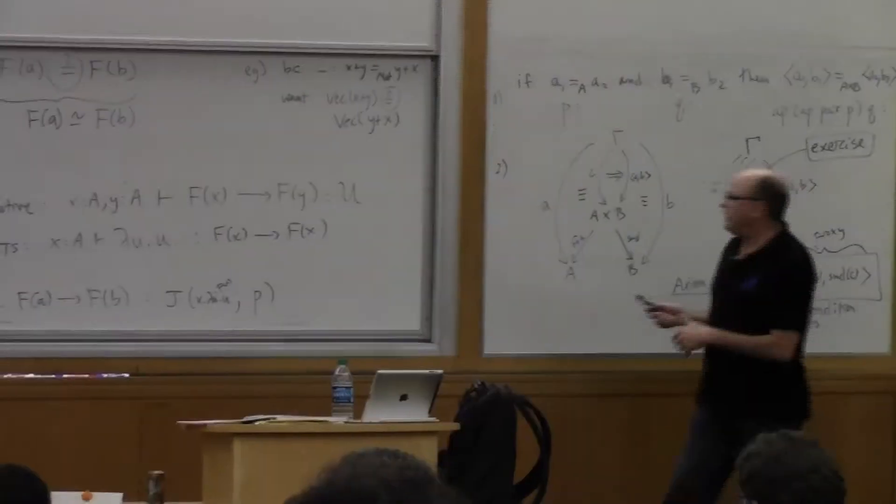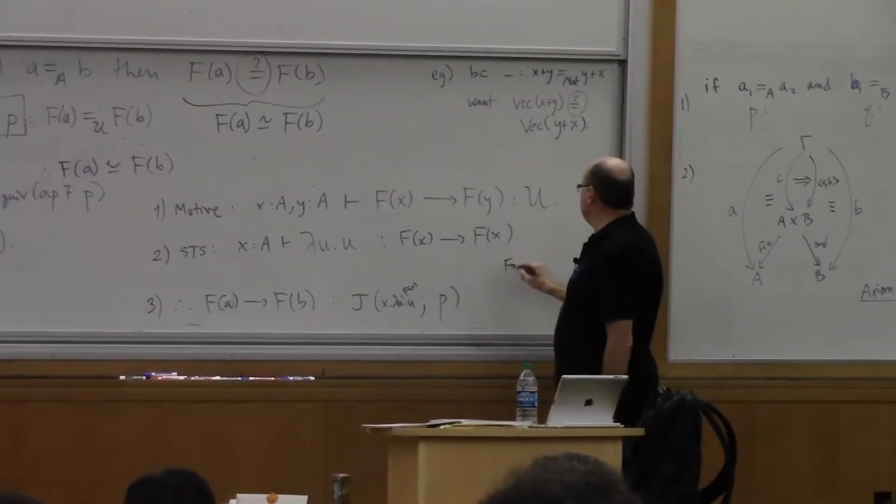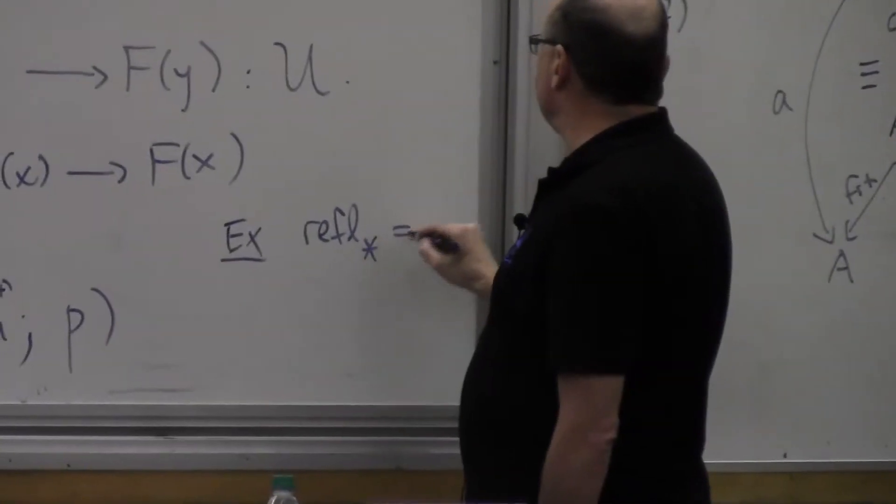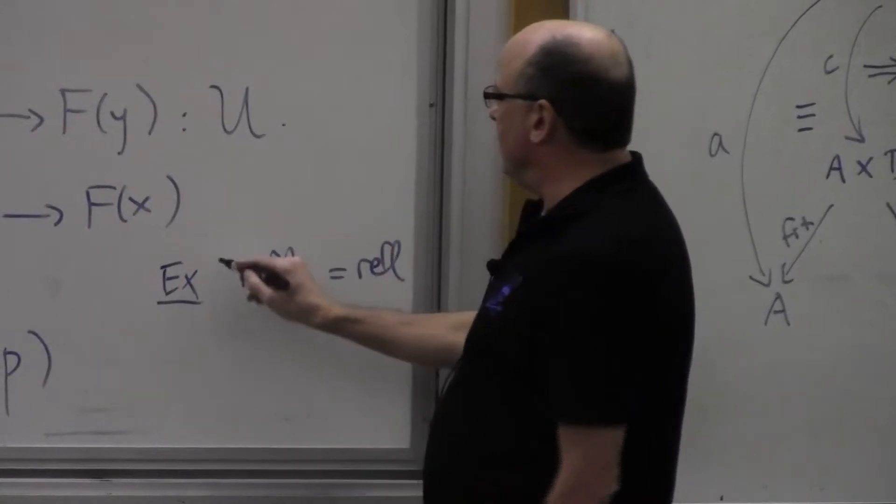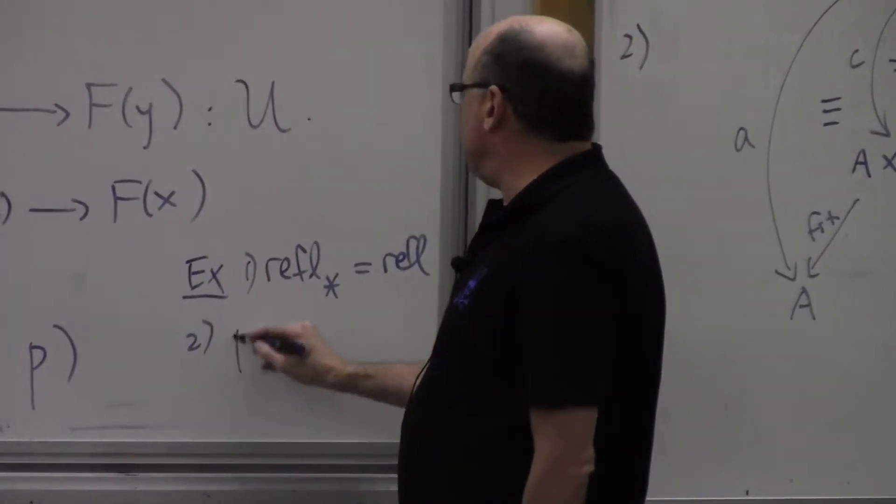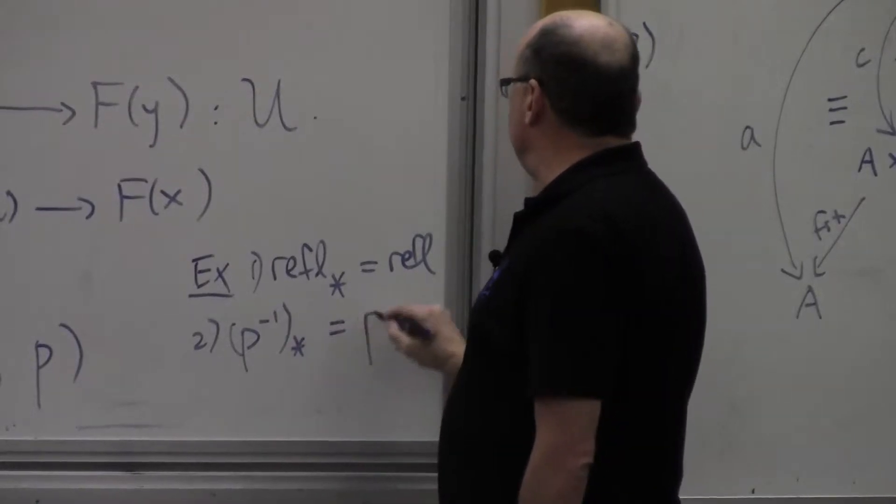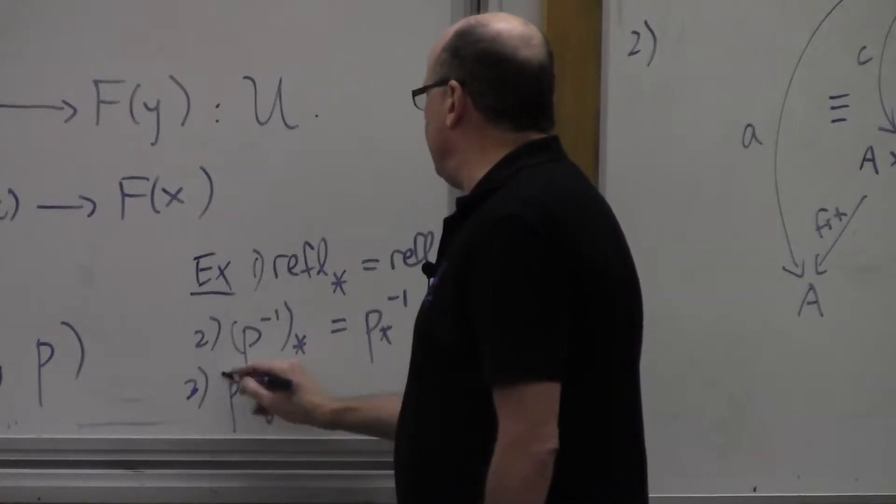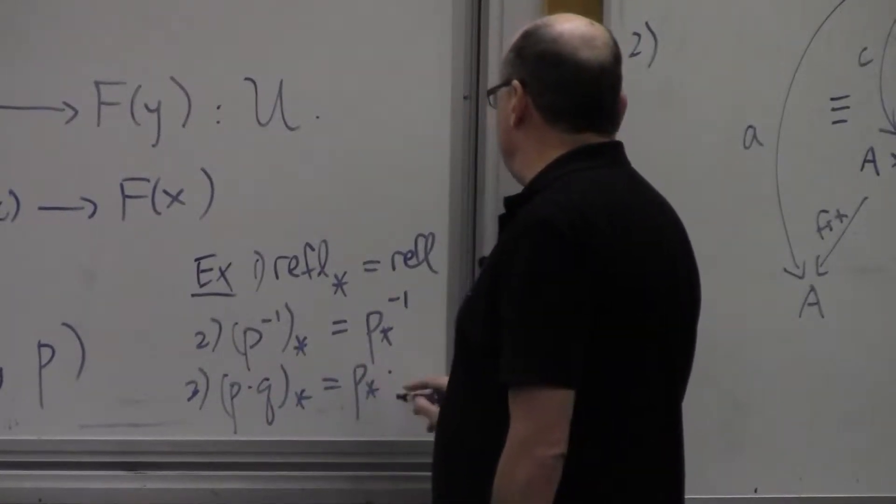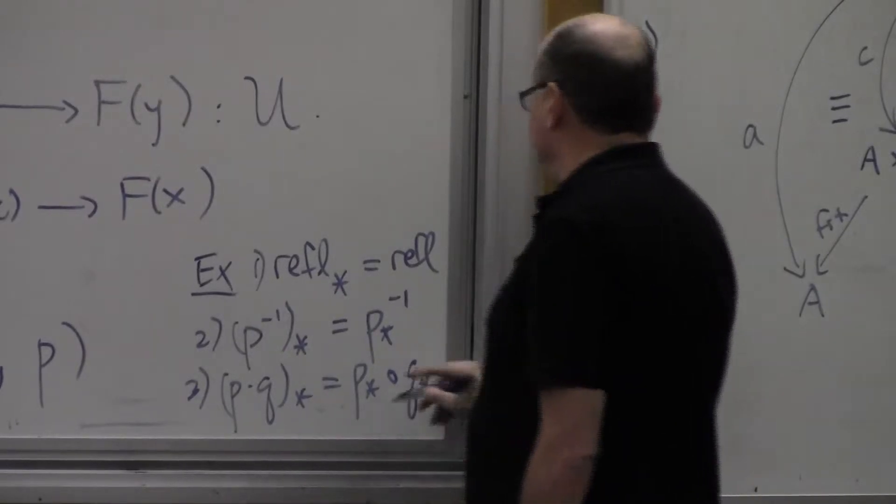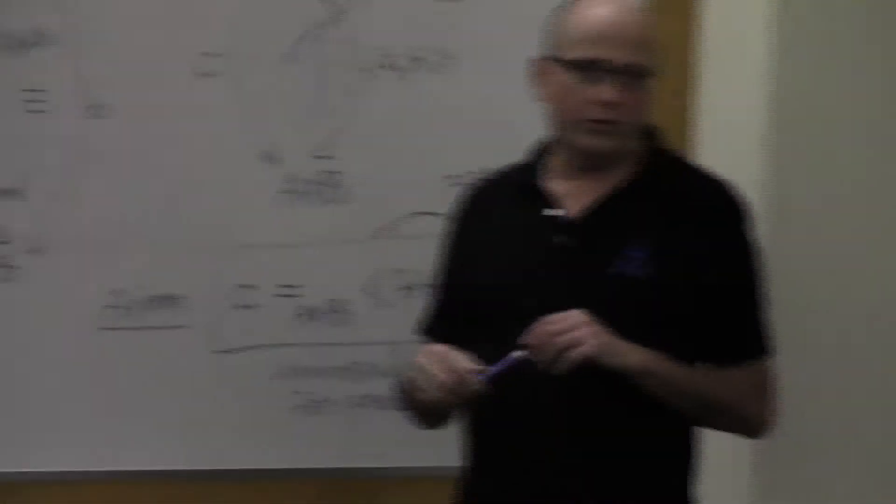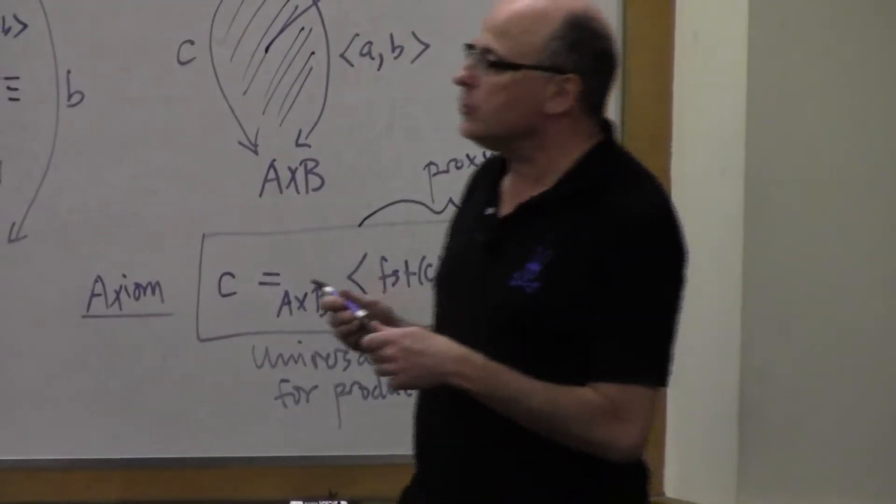So the thing I fill in here is x dot lambda uu. If you were to write the types, that's where the x would be. Lambda u colon f of x dot u. So that's why it's x dot. And we're done. We have the notion of transport. And then as an exercise, you can show that, I'll just write it briefly, ruffle lower star is ruffle. You have to make it all precise. But if I take p inverse lower star, that's p lower star inverse. And if I take p concatenated with q lower star, that's p lower star composed with q lower star. Function composition. You can write, you can do all that. It's in the hot book, but you can do those exercises. Those are all proved by path induction using the properties of transport.